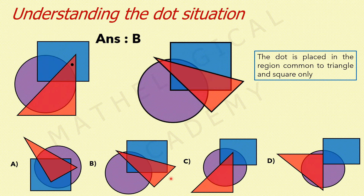Option B: there is some region which is common to triangle and square only, so this is one possibility. Let's check if we don't have any other option like that — of course we will have only one such option.